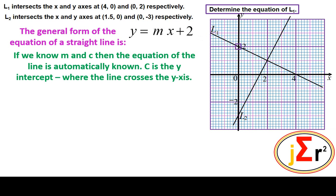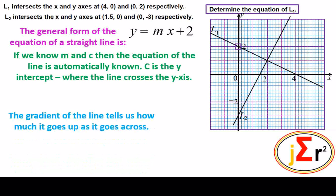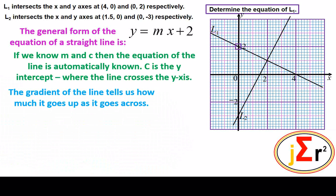C equals 2. Now we need to find the gradient and we are finished. The gradient of the line tells us how much it goes up as it goes across.